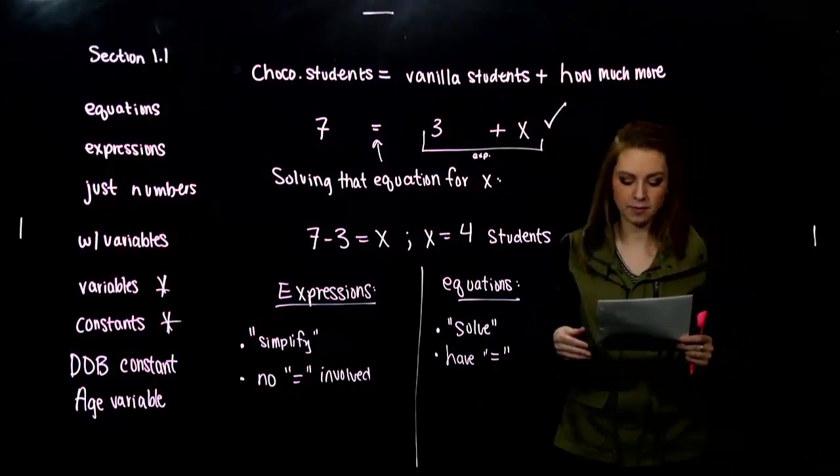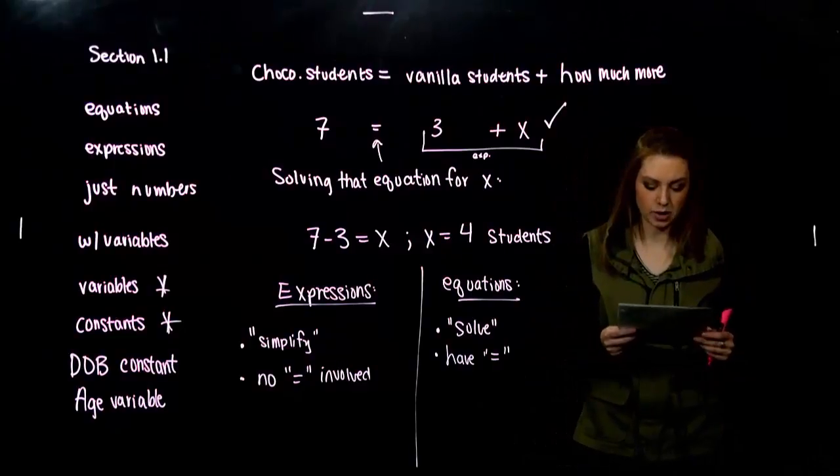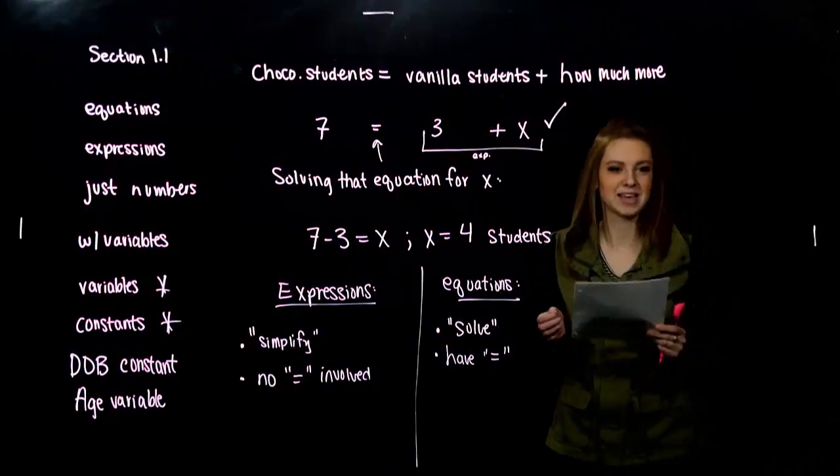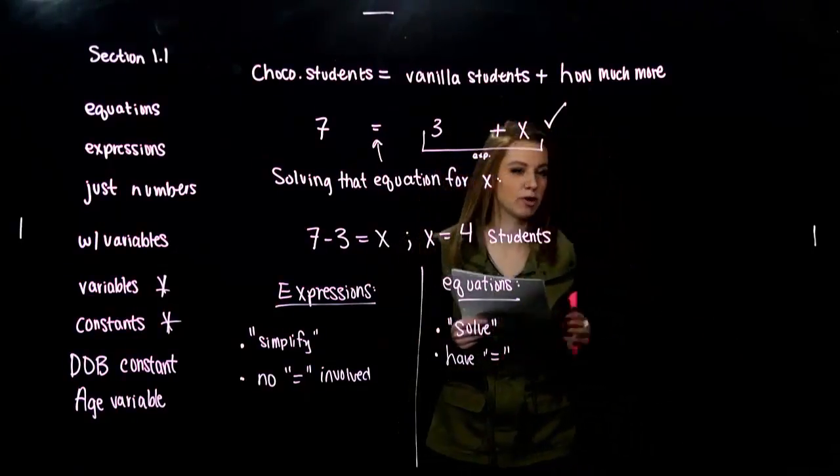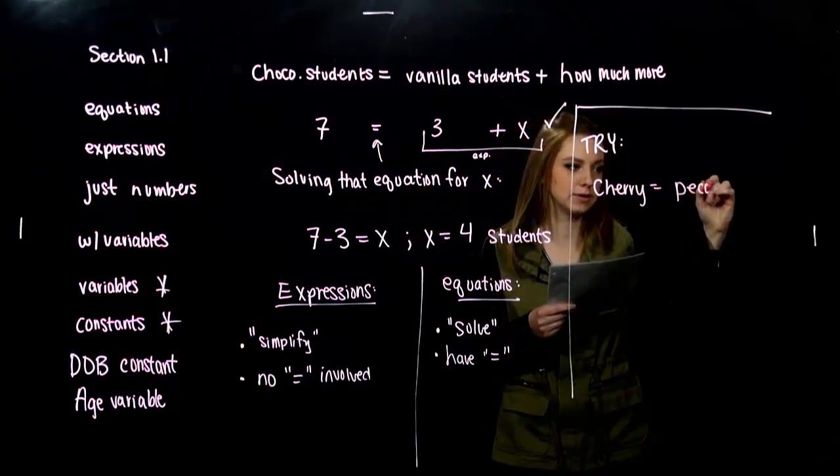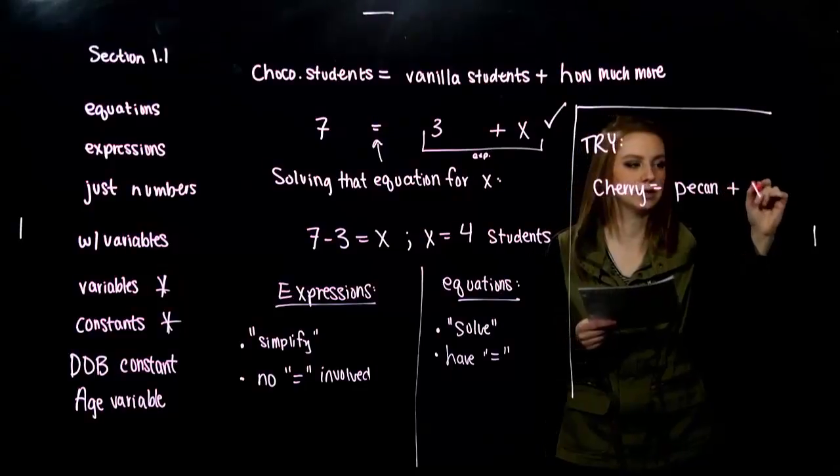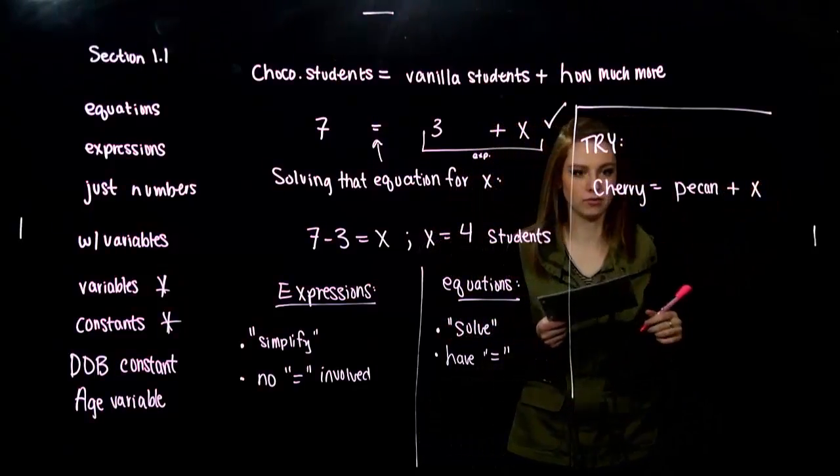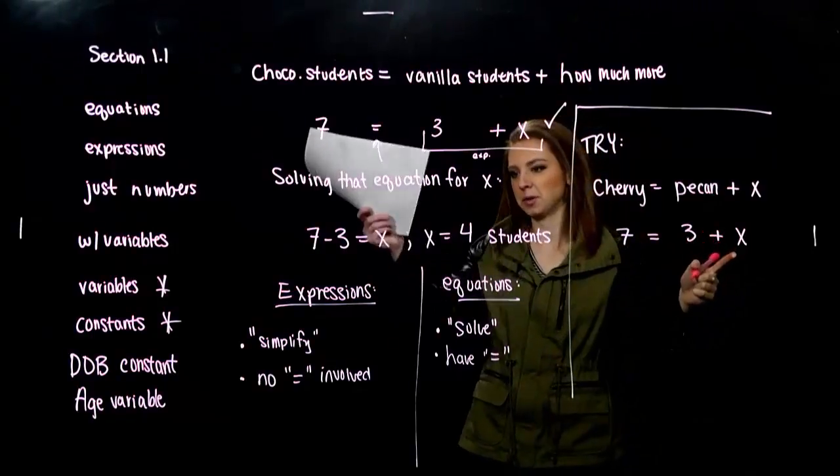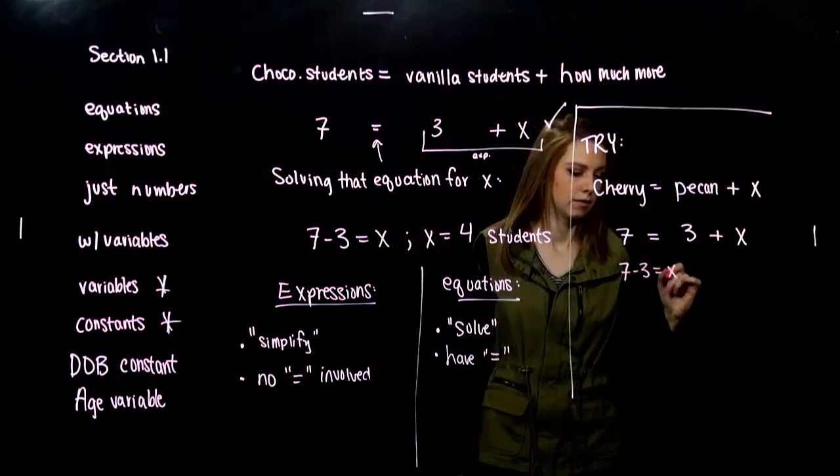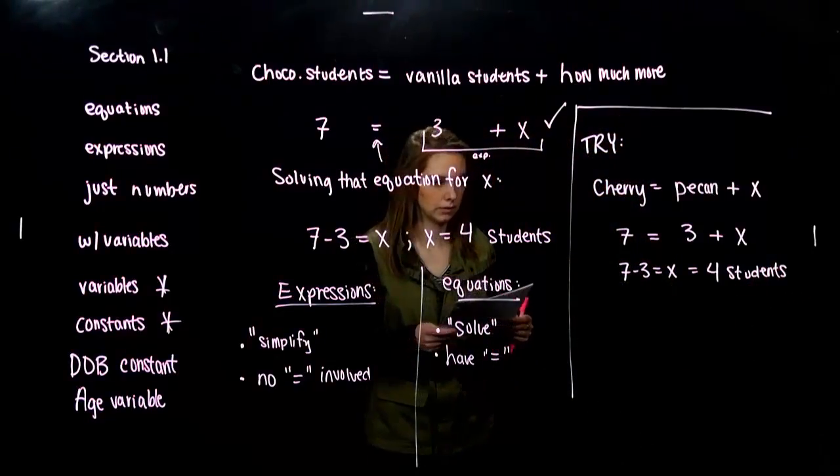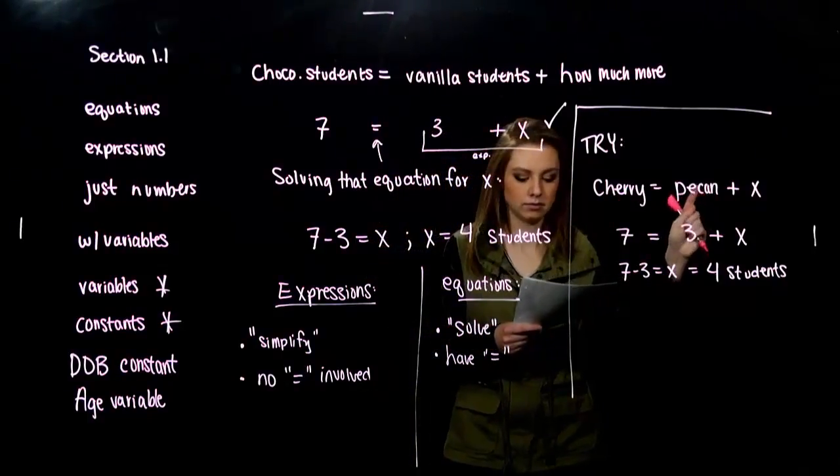So one for you to try. Using that same figure, that graph on the first page, write an algebraic equation to discover how many more students liked cherry ice cream better than pecan. So give it a shot. Write an equation. Don't just do it in your head. So how did you set it up? My cherry is going to consist of the number of pecan students, plus a little bit more that I don't know about. So again, we can plug in the information that we know. Seven students liked cherry, three students liked pecan. And the difference between them, I don't know what it is yet. But very similar to what we saw before. How many students were we talking about? Four of them. So four more students liked cherry ice cream than pecan.